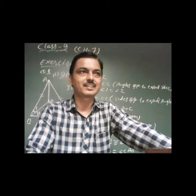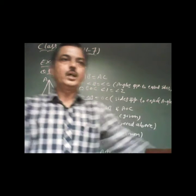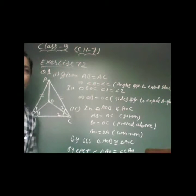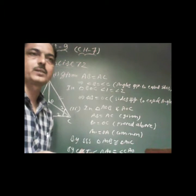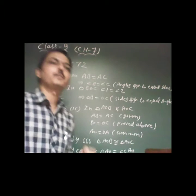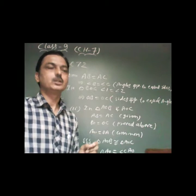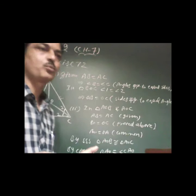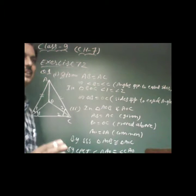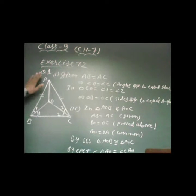Today we will discuss Exercise 7.2. Yesterday we discussed two properties of triangles: angles opposite to equal sides are also equal, and sides opposite to equal angles are also equal. We apply these two properties to solve the questions given in Exercise 7.2.